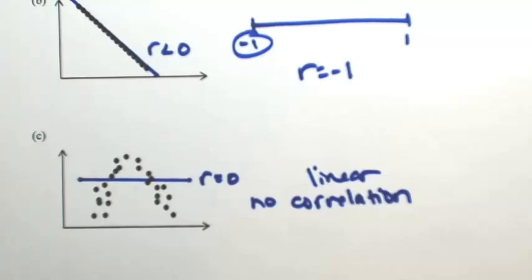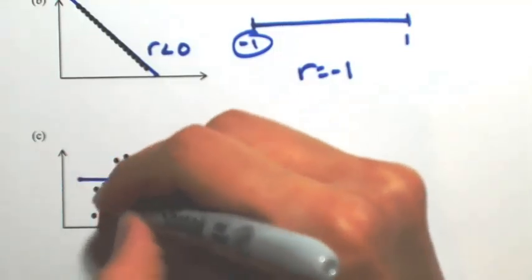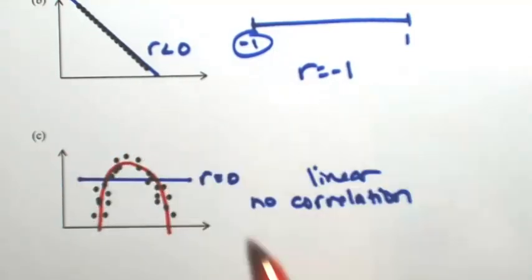There is actually, if you look at it, a parabolic type of correlation. If I were to do a parabola, I would hit a lot of the points, but this is not a line. So that means there's no linear correlation.